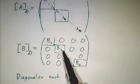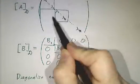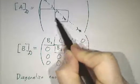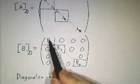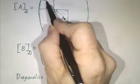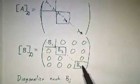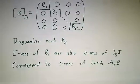So now, the eigenvectors of the block are also eigenvectors of this block. Because this block is just λ times the identity. Everything's an eigenvector of the identity. So now we've got vectors that are eigenvectors of this block and this block. Eigenvectors of this block and this block. Eigenvectors of this block and this block. And they correspond to eigenvectors of both A and B. And we're done.